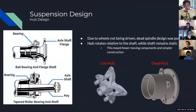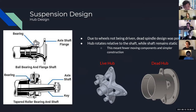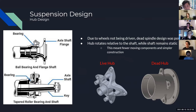Due to the wheels not being driven, the dead spindle design was possible. Our hub rotates while the shaft remains static, meaning fewer moving components and simpler construction. Compared to a live hub — which is a heavily optimized but significantly more complex five-axis part — the dead hub is a simpler three-axis CNC part and significantly cheaper to manufacture.